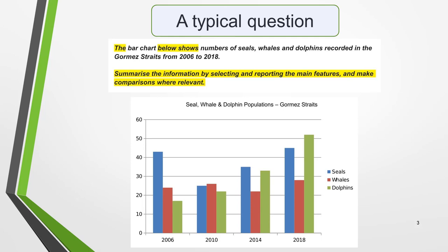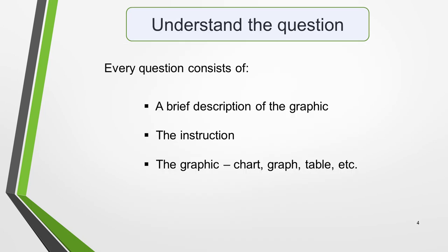The first thing to understand is that the format of every question in IELTS Academic Writing Task 1 is the same. Here's a typical question. The highlighted words are always the same no matter what type of question you get. The bar chart below shows numbers of seals, whales and dolphins recorded in the Gomez Straits from 2006 to 2018. Summarise the information by selecting and reporting the main features and make comparisons where relevant.